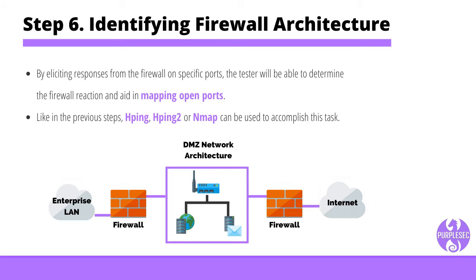Step six: identifying firewall architecture. Sending crafted packets to already-identified firewall ports will provide a complete list of port statuses. By eliciting responses on specific ports, the tester can determine the firewall's reaction and map open ports. HPing, HPing2, or Nmap can be used for this. If the firewall returns a SYN-ACK packet, the port is open. If it returns a RST packet, the firewall rejected the packet. If no response is received, the firewall dropped the packet, indicating a filtered port. If the firewall returns an ICMP type 3 code 13 packet, the connection attempt was blocked.